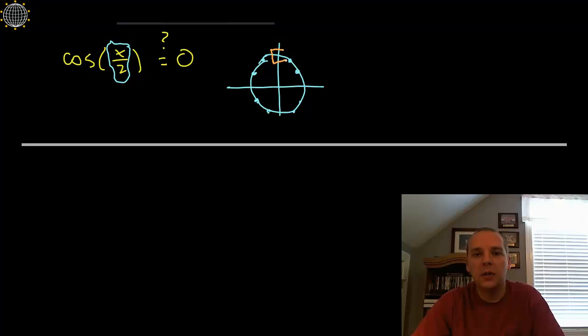Hopefully you said right here—right, 90 degrees or π/2—and right here. The cosine, or the x-coordinate of the point, is zero.